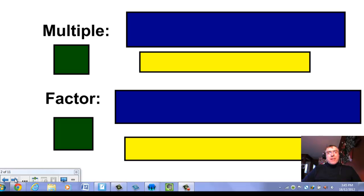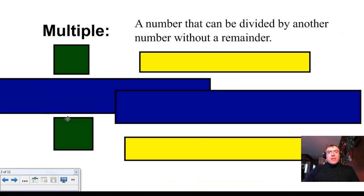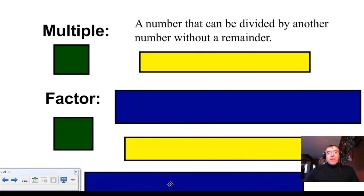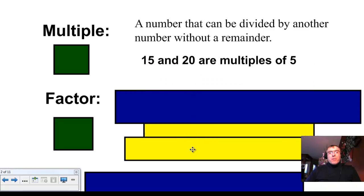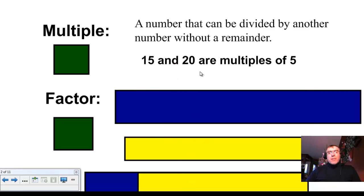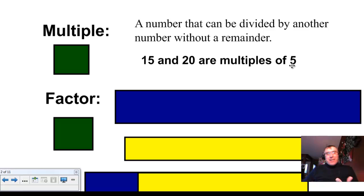What do we say when you've got a multiple? Well, a multiple is a number that can be divided by another number without a remainder. So, for example, 15 and 20 are multiples of 5. Can you think of any other multiples of 5? Sure — 10, 25, 30, 35, 40, 45, 50, these are all multiples of 5.